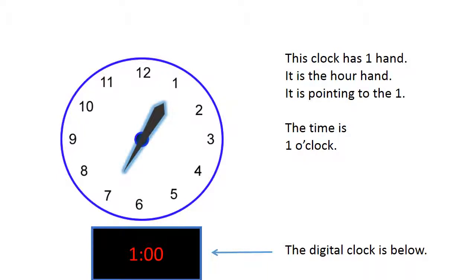This clock has one hand. It is the hour hand. It is pointing to the 1. The time is 1 o'clock.